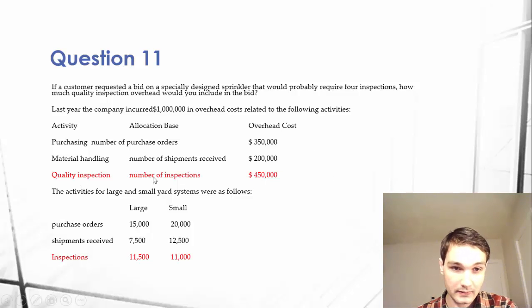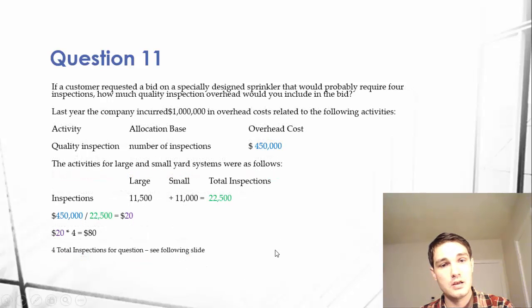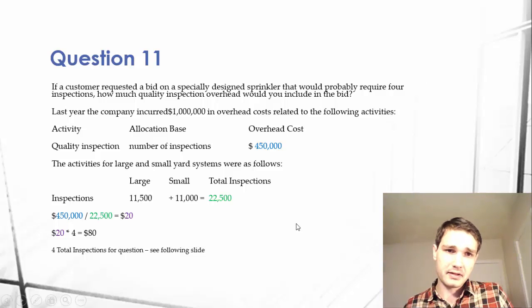All we need is quality inspection. Our allocation base is number of inspections. How many inspections did we do during the year? We had 11,500 large and 11,000 small. It doesn't ask us to split the activities into large or small bases, so we can just add these together. If we add them together, we get 22,500. I just summarized all the important information.